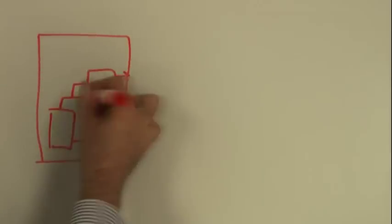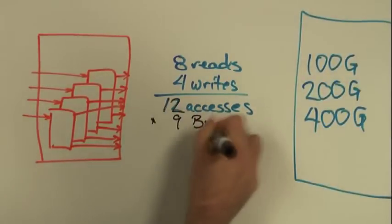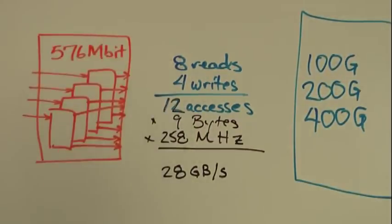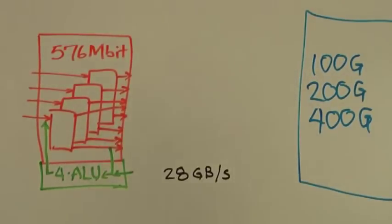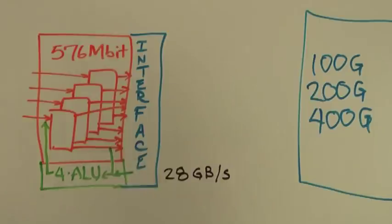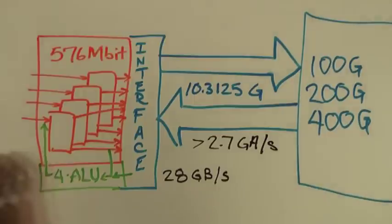The bandwidth engine IC is a breakthrough device for next generation 100 gig 200 gig networking systems. It contains a high access rate 576 megabits memory and an onboard ALU. It uses a 10.3125 gigabits per second CERTES interface to achieve performance of over 2.7 giga accesses per second.